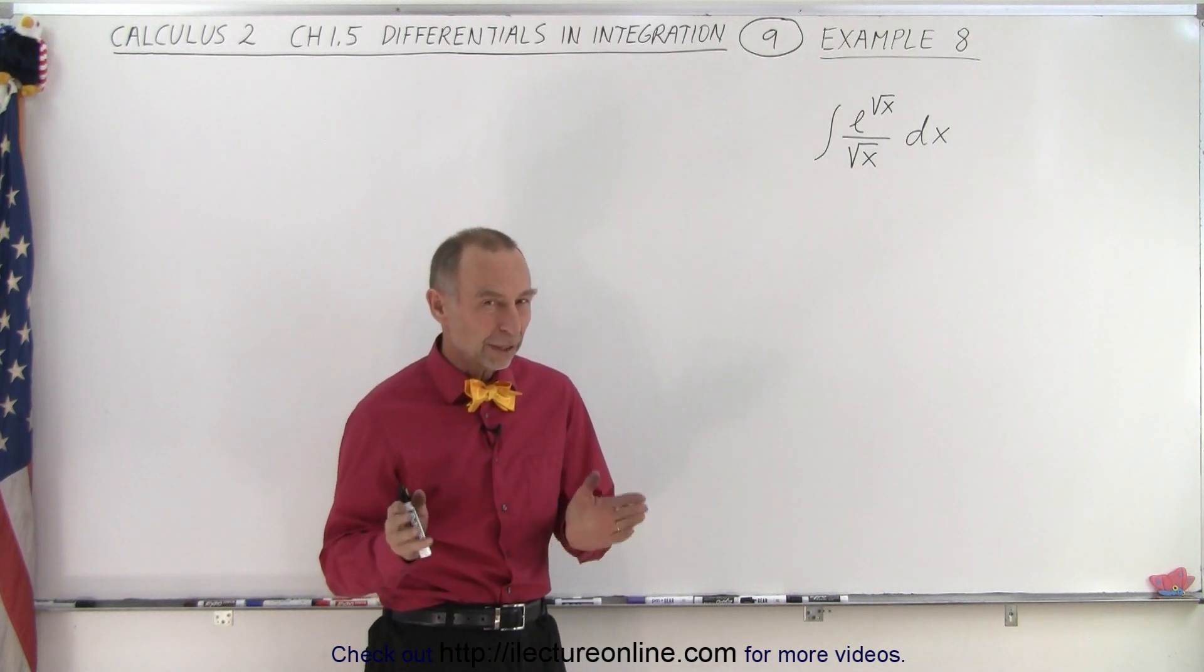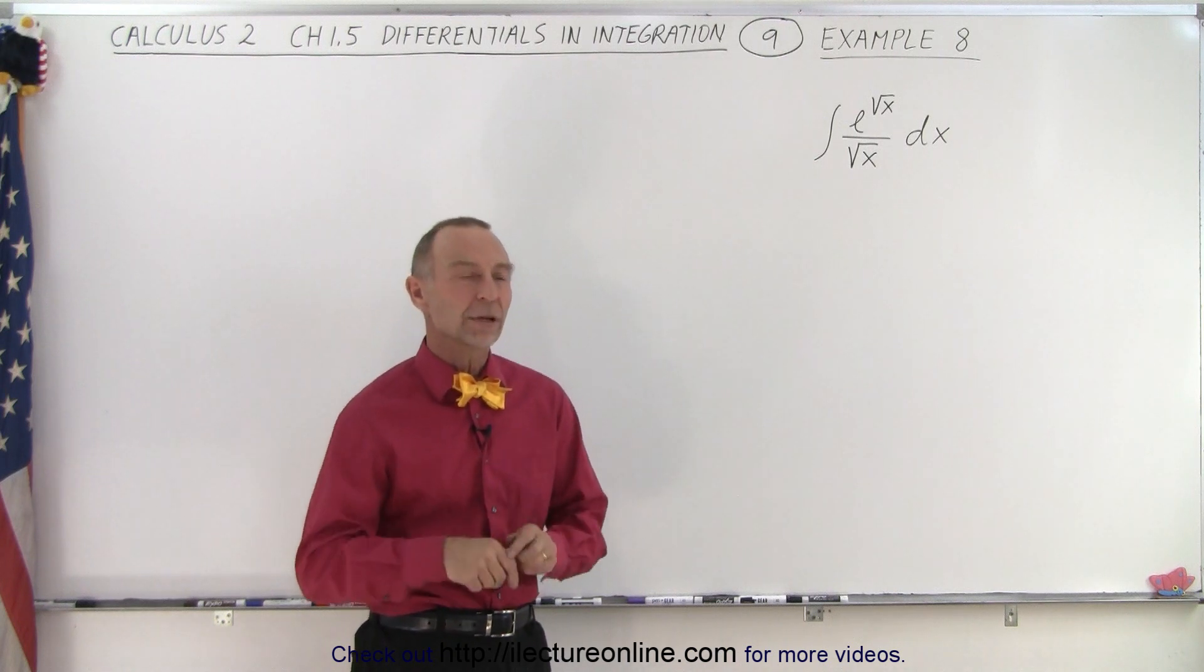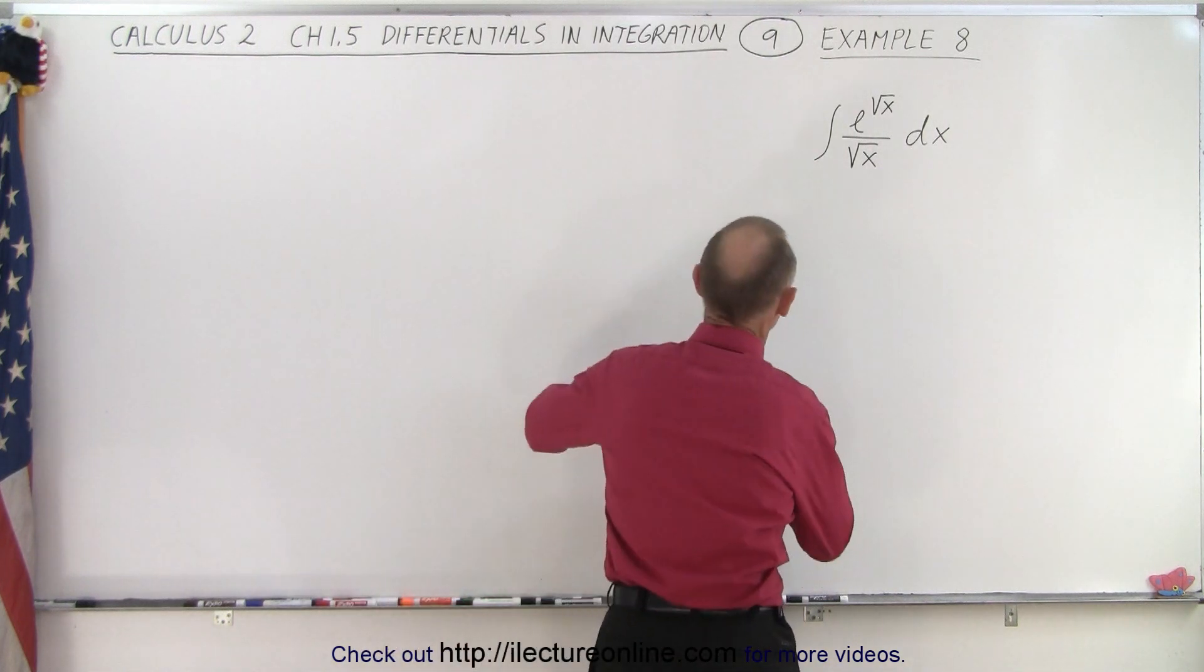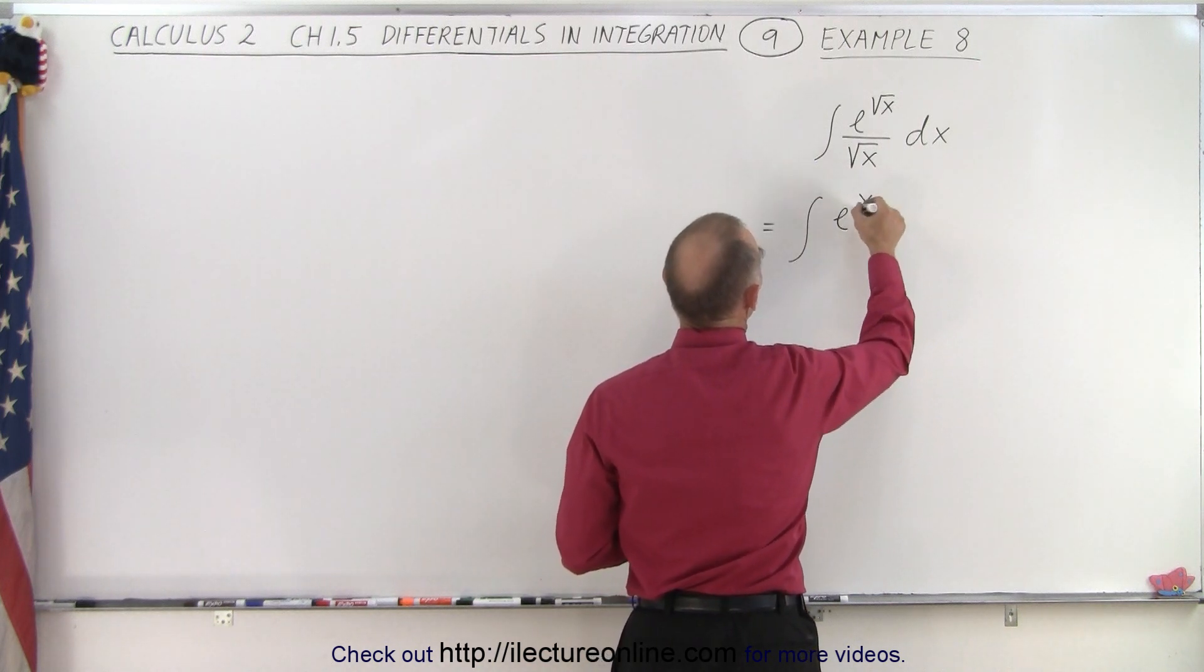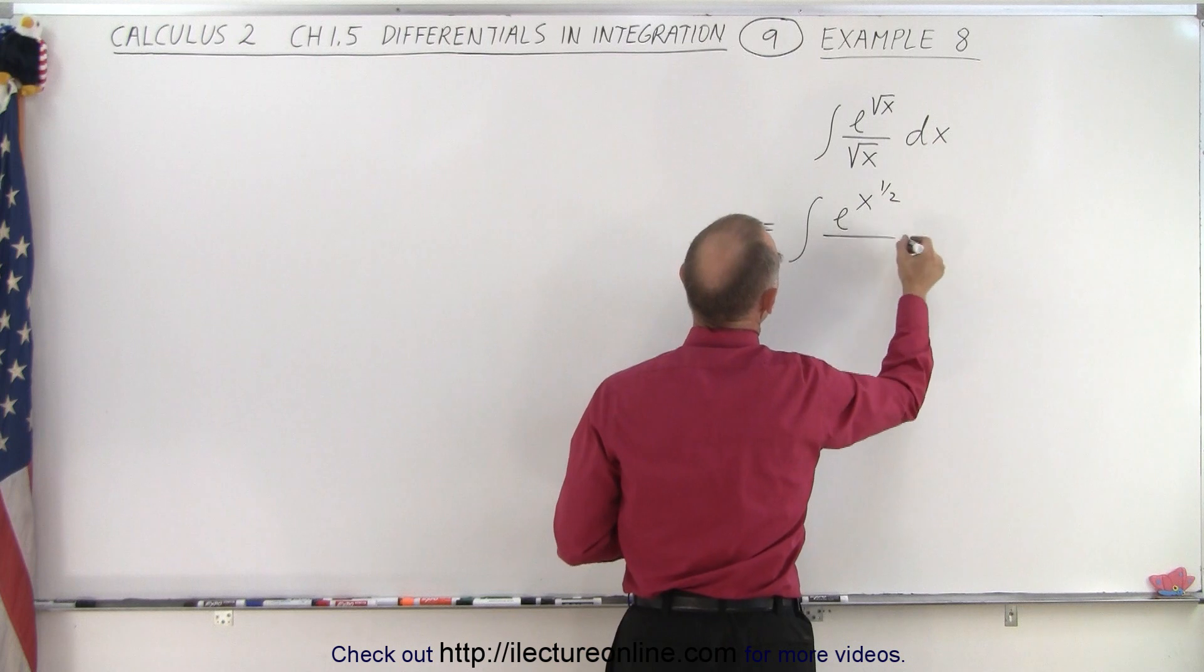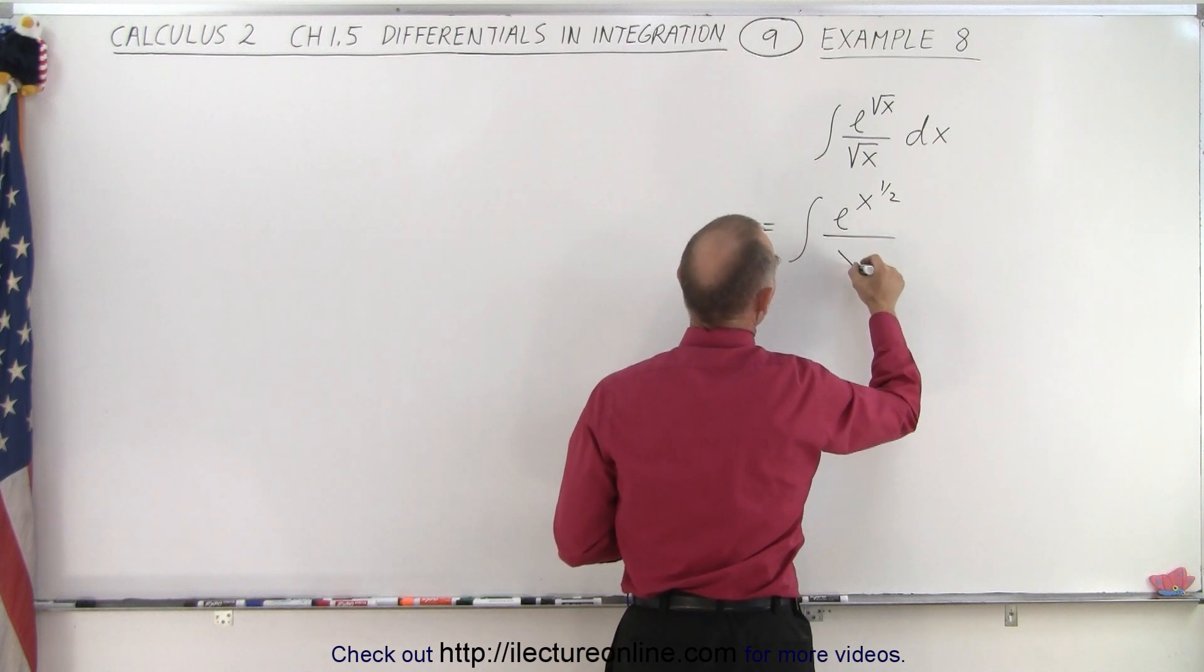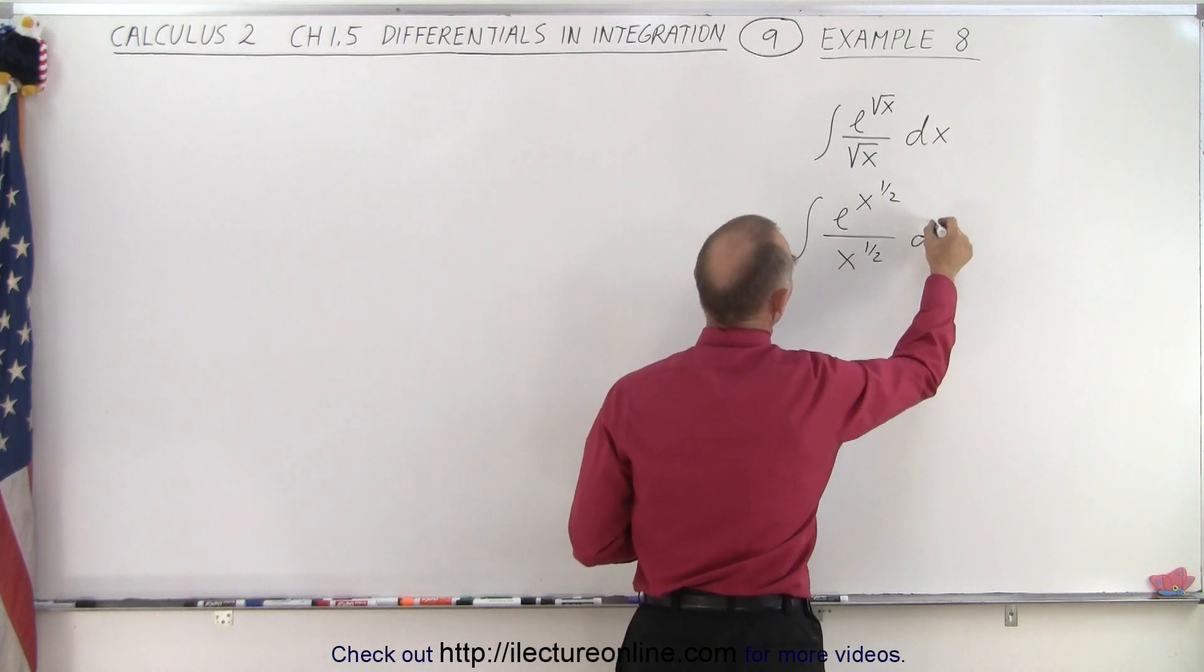But what I always recommend is whenever there's a radical, change it to an exponential form. So let's do that first. This is equal to the integral of e to the x to the 1/2 power divided by x to the 1/2 power times dx.